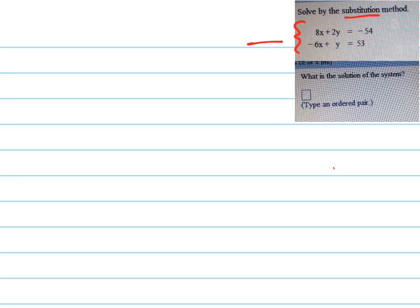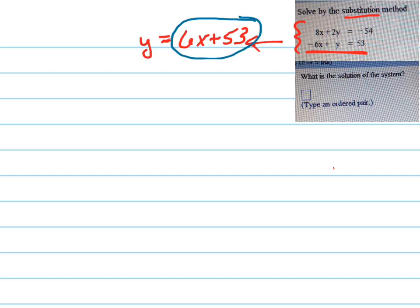But since they want us to do substitution, we'll do that. So I'm going to take this bottom equation right there and solve it for y. I'm going to add 6x to both sides. And now I'm going to take what I just solved and substitute — hence the word substitution — in where I see y in the other equation.